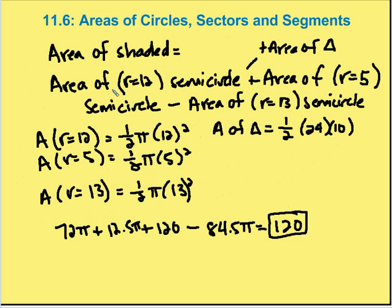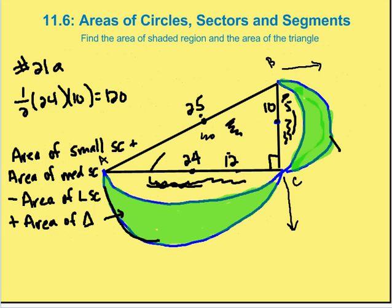The area of the shaded region equals the area of the medium semicircle (radius 12) plus the area of the smaller semicircle (radius 5), minus the area of the larger semicircle (radius 13), plus the area of the triangle (120). The radius of the smaller semicircle is 5 (half of 10), the medium is 12, and the larger semicircle has a radius of 13 — from a 5-12-13 right triangle, so the hypotenuse is 13.